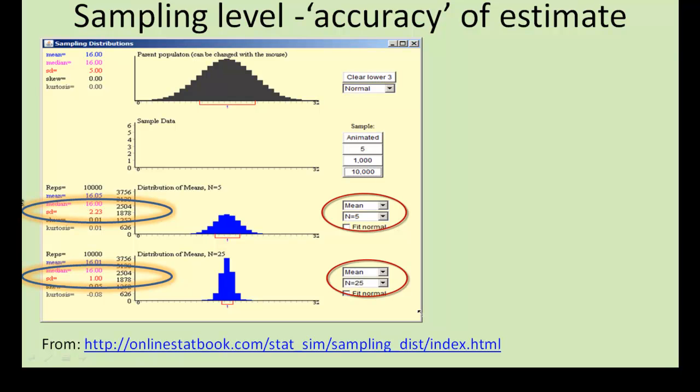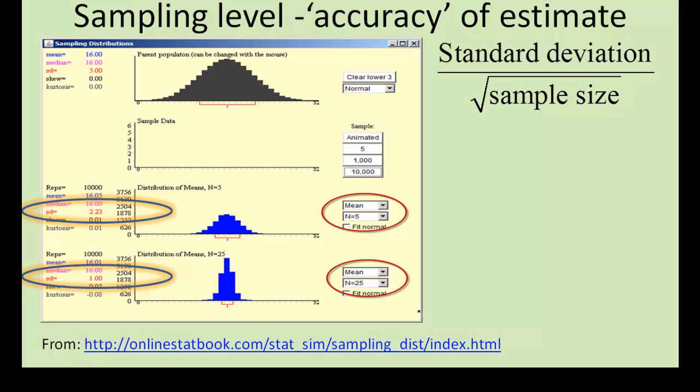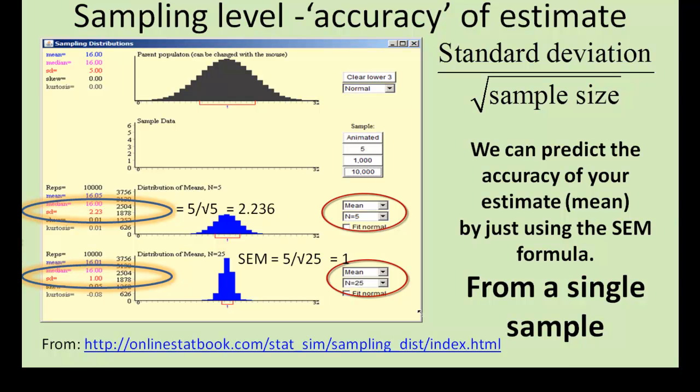Now I'll introduce you to another term, the standard error. The standard error is the same as the standard deviation but at the cross-sample level. The formula for the standard error of the mean is the standard deviation divided by the square root of the sample size. Now applying this standard error formula to our two sets of samples, we end up with exactly the same value that we got from the computer animations. This is amazing. So we can predict the accuracy of our estimate, that is the mean here, by just using the simple standard error of the mean formula from a single sample.